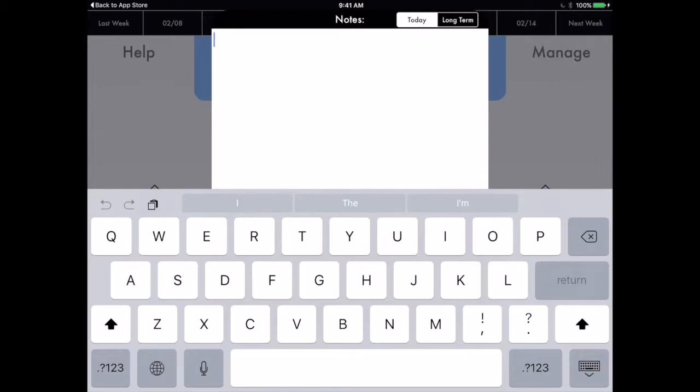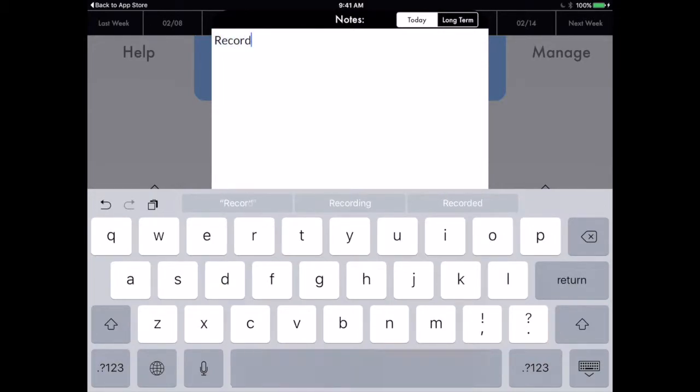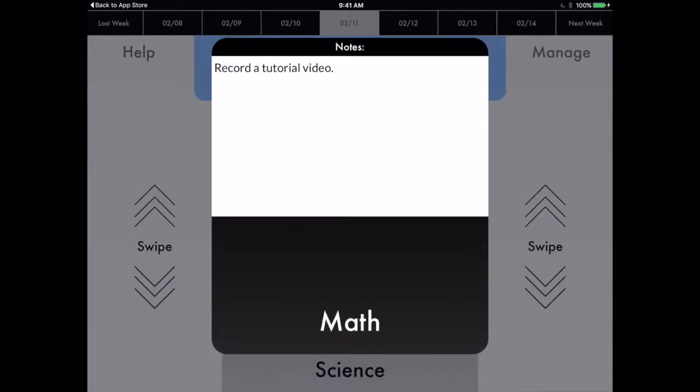Click on it, and you can see up at the top we have two options: today or long term. I'm just going to choose today because this is just something I have to do tonight. So let's say I have to record a tutorial video. Maybe I'm making a tutorial video for a peer group, or maybe for the grade below for next year.